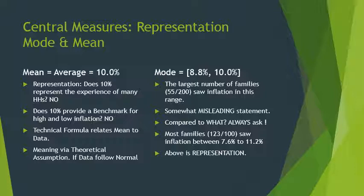Someone who doesn't know what we are comparing to would misunderstand the statement. Instead, if we look at the middle three bins, there are 123 families, and we can say the largest number of families saw inflation between 7.6% and 11.2%. This is an accurate description of the data, and these numbers could be taken as representative. So we can say that most families experienced inflation between 7.6% and 11.2%, which provides a representation of the general experience of the population. Obviously, this cannot be done with one number.